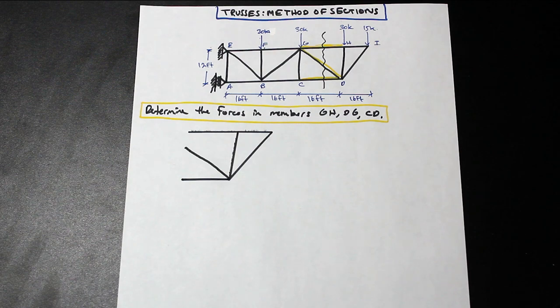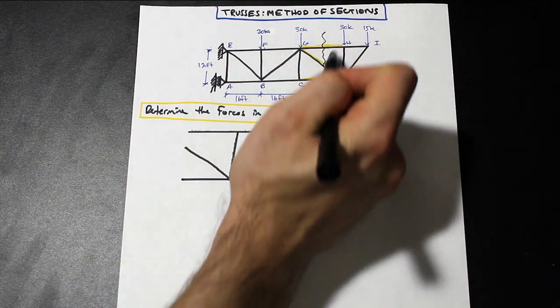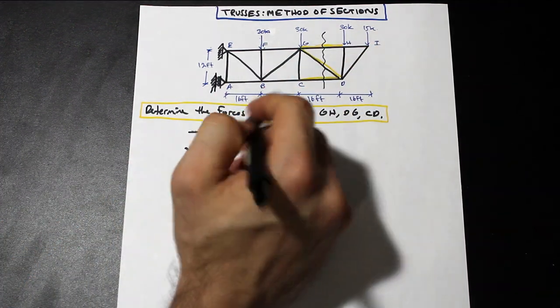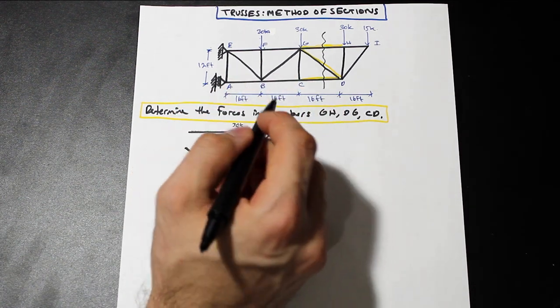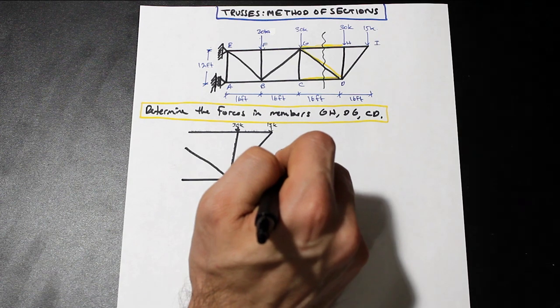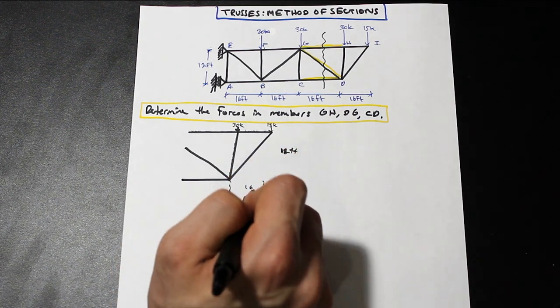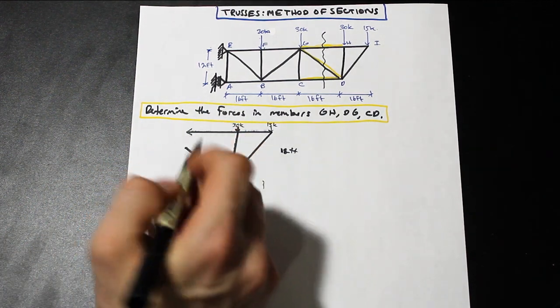So what I suggest, guys, is you draw a nice big picture. So wherever you cut, draw a big diagram. Because you're going to have to draw little numbers and little arrows in there, and it can get confusing. So on the test, take the whole page, draw the biggest drawing that you want. It's actually quite important. So what we've done is we've cut here. So I've taken the right side, and we have 30 kip here. We have our 15 kip here, and now we have 16, sorry, we have 12 feet here, 16 feet, and 16 feet.